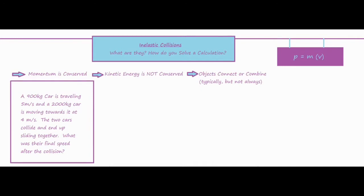We'll use the momentum formula a few different times to solve for the unknown variable. With an inelastic collision, because of vibration and heat, the kinetic energy is not conserved. In a lot of these inelastic collisions, your objects will typically connect or combine after the collision, just as our situation describes. So our first step is to label everything and draw some pictures before we start plugging in numbers and doing a little bit of algebra.